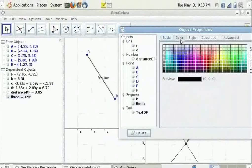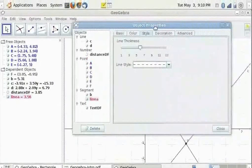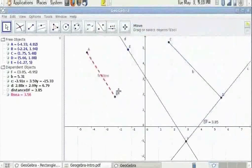In the color tab, you can change the color of the line. In the style tab, you can change the thickness and you can change the style. When you close this, you have the new appearance of the line.